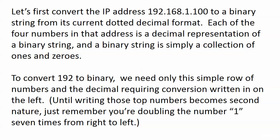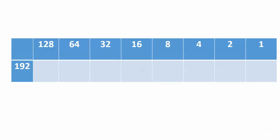First thing we're going to do is convert the IP address 192.168.1.100 to a binary string from its current dotted decimal format. Each one of those numbers is in a separate octet — we have four octets in an IPv4 address — and you have to convert each one of these numbers individually to a binary string. They are separated in that dotted decimal format and that's the way we're going to convert them. To convert 192 to binary, or any number, you only need this simple row of numbers from 128 to 1 going from left to right, and whatever number you're converting written on the far left-hand side.